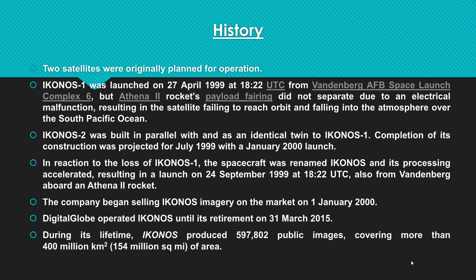IKONOS-2 was built in parallel as an identical twin of IKONOS-1, with completion projected for July 1999 and a January 2000 launch. In reaction to the loss of IKONOS-1, the spacecraft was simply renamed IKONOS and its processing was accelerated, resulting in a launch on September 24, 1999, also from Vandenberg AFB Space Launch Complex 6 on an Athena II rocket. The company began selling IKONOS imagery on January 1, 2000. DigitalGlobe operated IKONOS until its retirement on March 31, 2015, during which time it produced approximately 597,802 public images covering more than 400 million km² of area.